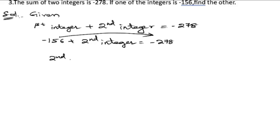So the second integer equals minus 278, minus this minus 156 becomes positive, so positive 156. Now let us subtract: 278 minus 156. So 8 minus 6 is 2, 7 minus 5 is 2, or 2 minus 1 is 1.